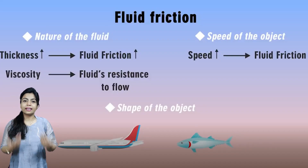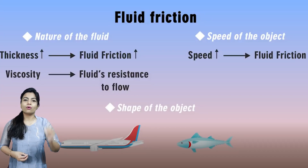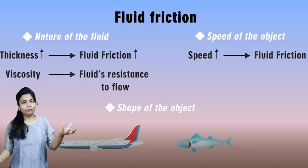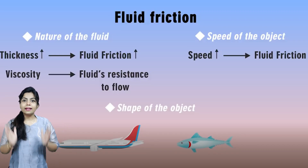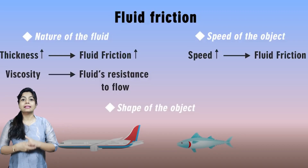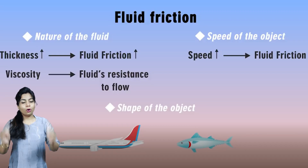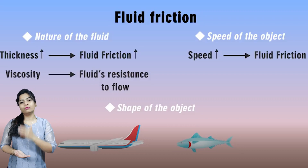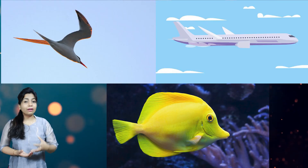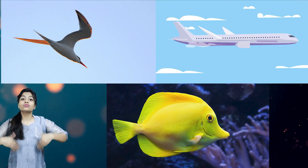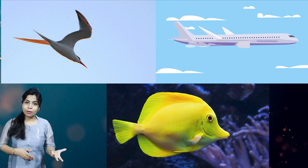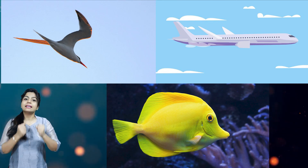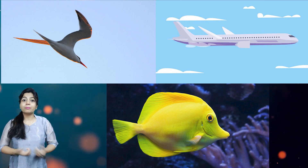The second factor in fluid friction is the speed of the object. When the speed of the object increases, fluid friction also increases. The third factor is the shape of the object. A streamlined shape reduces fluid friction. Fishes and birds have streamlined bodies, so while swimming and flying, they experience less friction than our body.